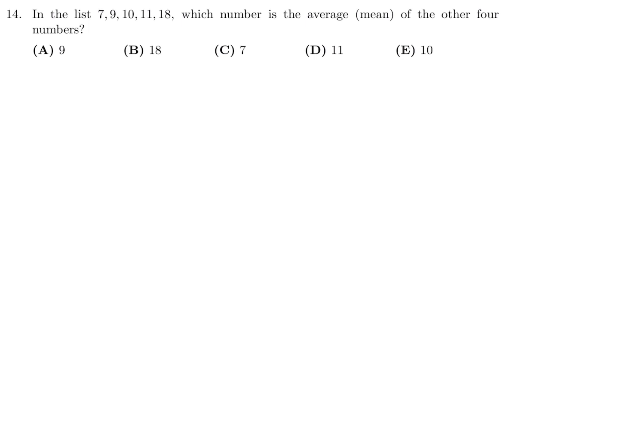In the list 7, 9, 10, 11, 18, which number is the average of the other four numbers? You just got to fiddle around with this. When you do, you find that 7 plus 9 plus 10 plus 18, if you take those four numbers and then take their average, you get 11, which is that other number. It satisfies the question that which number is the average of the other four, and that number is 11. So number 14, the answer is D.